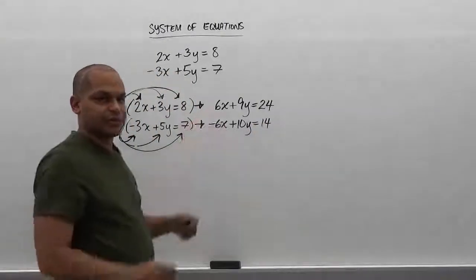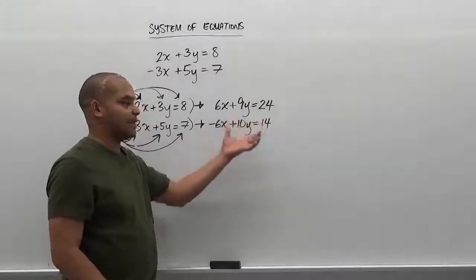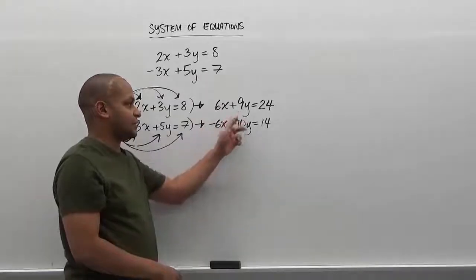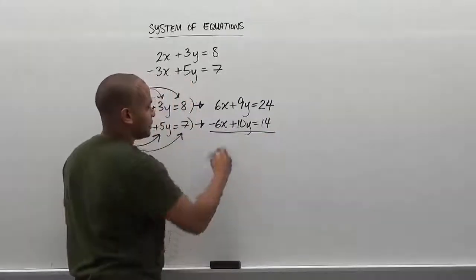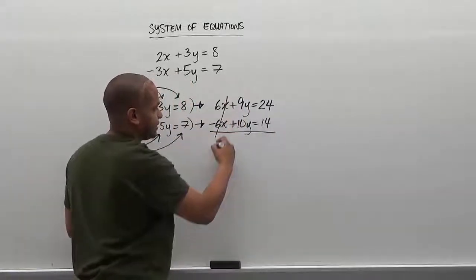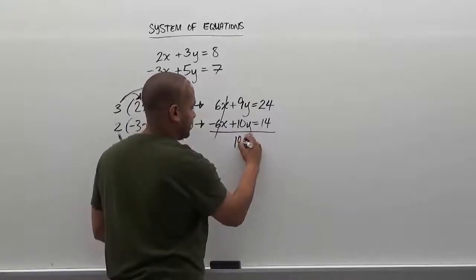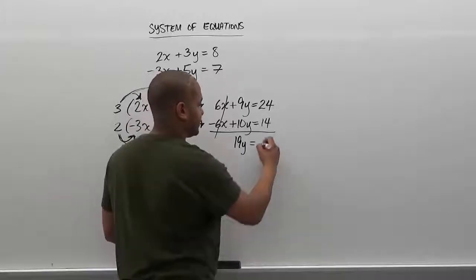Now that we have the two equations set with the same value but opposite signs, we can add the two equations and cancel out the x term. In this case, we're going to be solving for the y term after the summation of these two equations. So the 6x and negative 6x cancel out to 0. We have 9y plus 10y which is 19y, and this is equivalent to 24 plus 14 which gives us 38.